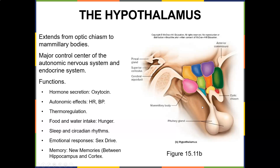The hypothalamus does homeostasis. It extends from the optic chiasma and is the major control center of the autonomic nervous system.